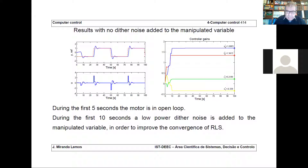Any question about these examples? So we have seen this idea of adaptive control in two families of algorithms: recursive least squares to identify the model plus minimum variance, and recursive least squares plus pole placement. And you can apply this to other control strategies.